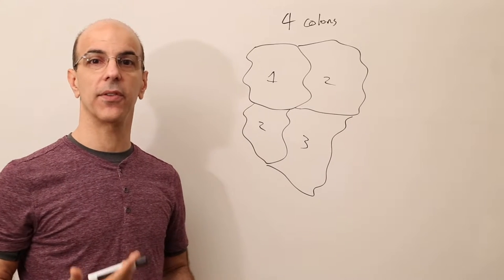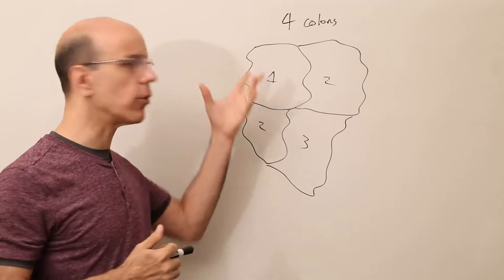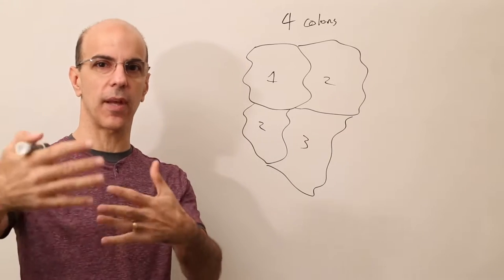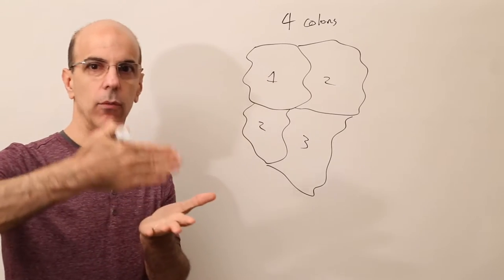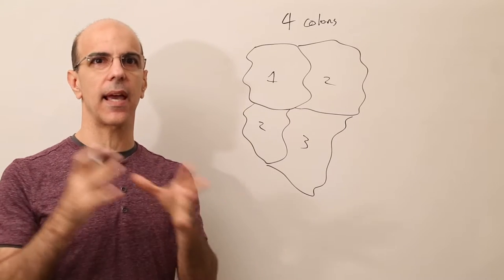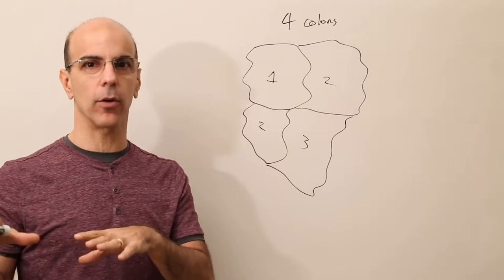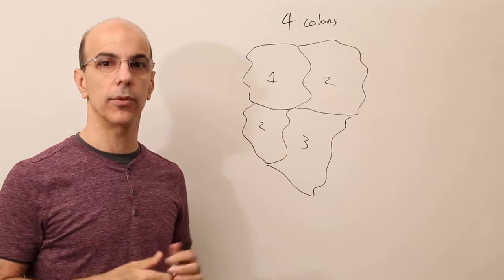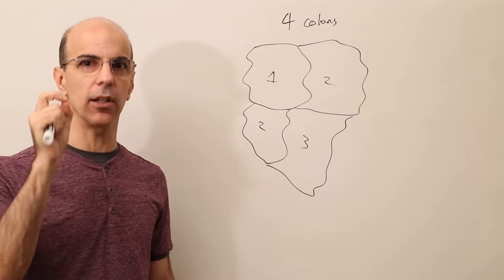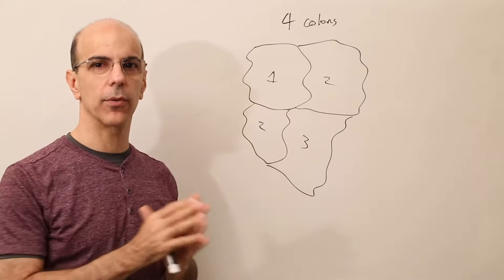So what do I mean by a common sense approach to this? Well, I'm not a mathematician. I don't know how to do a formal proof. But I can think about the problem and logically take you through it step by step, and we can go until we reach a point where we go, 'Oh yeah, that makes sense.' Now, making sense and being mathematically proven are very different things. But I can certainly get you to a point where you logically conclude that four colors is the maximum for all maps.